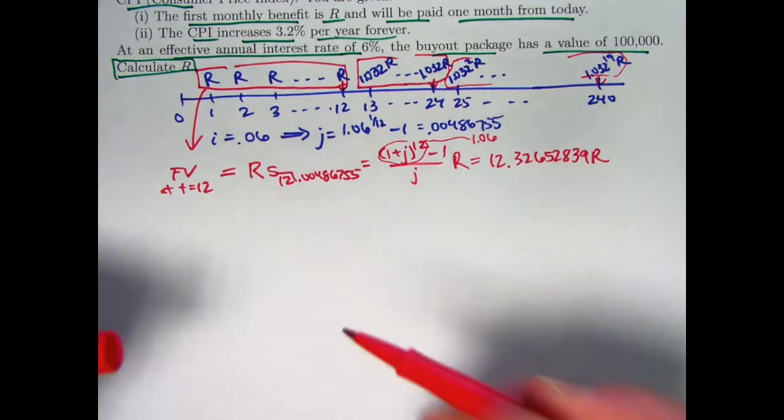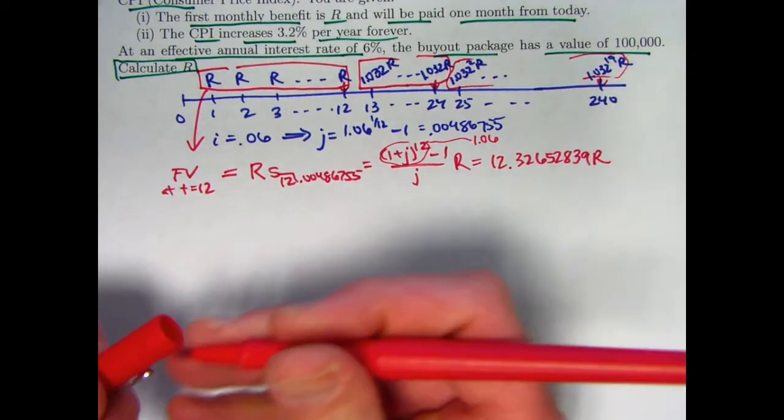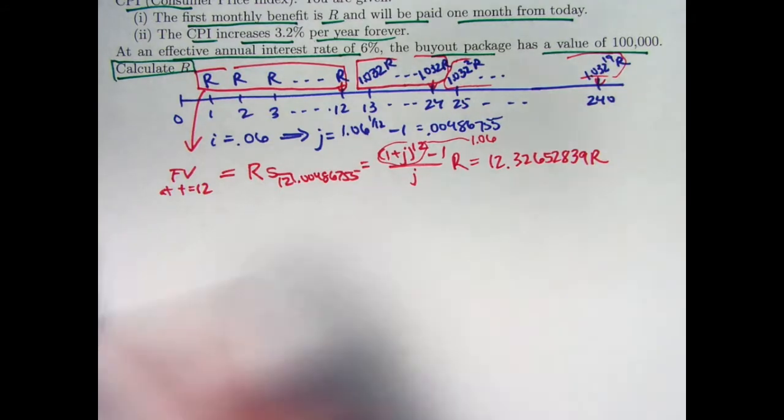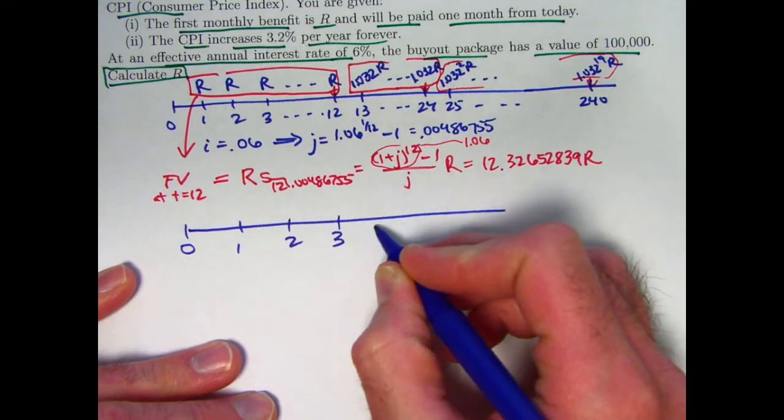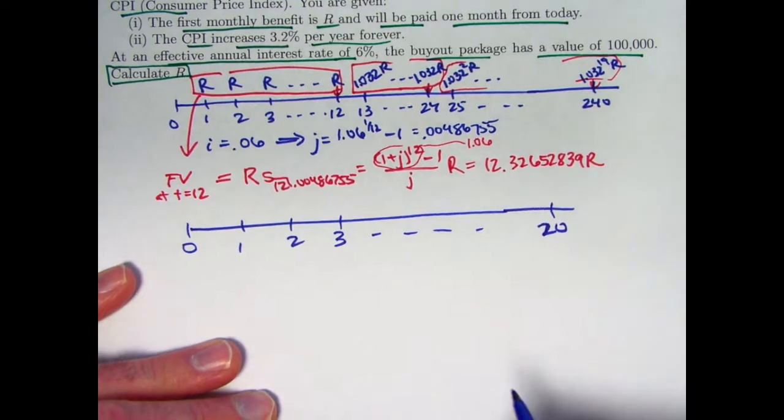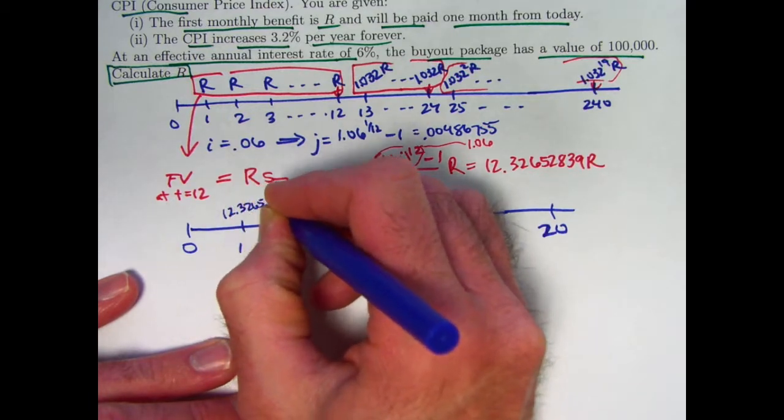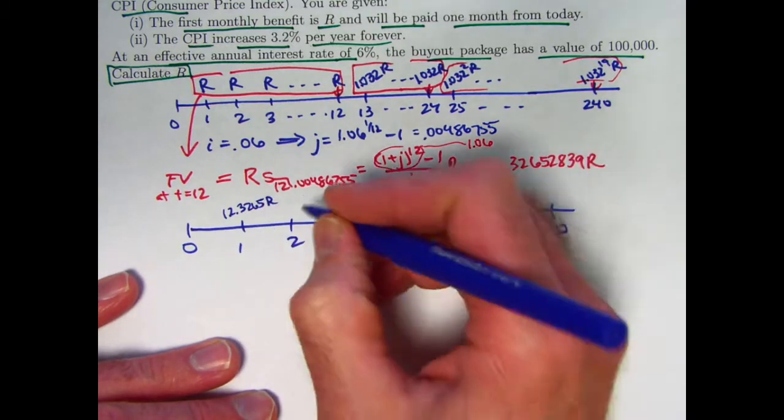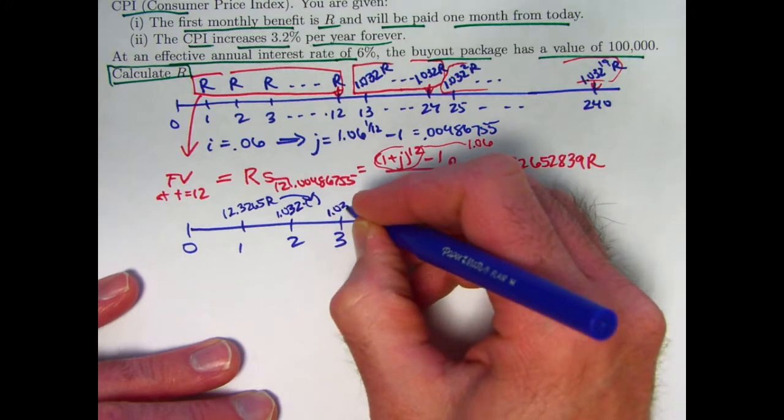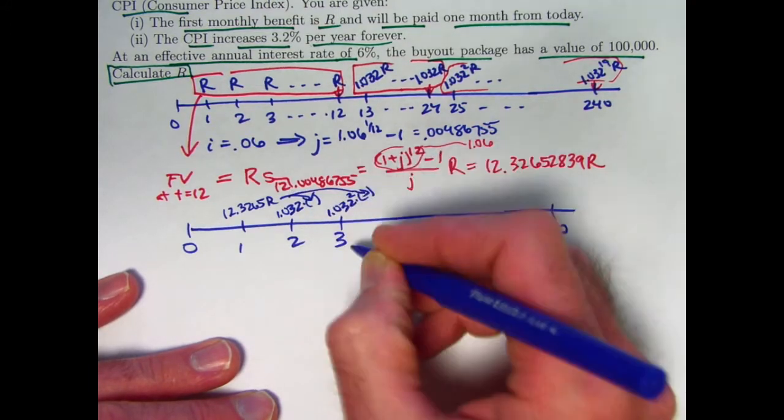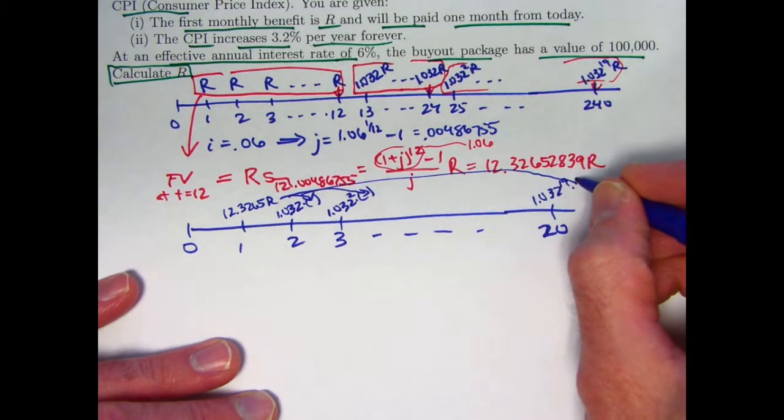For the next year's payments evaluated at time 24, it's going to be this thing times 1.032, etc. So I get an equivalent sequence of payments at the end of each year. Now let's think of these numbers as being in years, 20 years here. So I'm going to get the 12.3265R right there. Then I would get 1.032 times that at time 2. Then 1.032 squared times that same thing at time 3, etc. At time 20, I'll get 1.032 to the 19th times that same quantity at time 20.